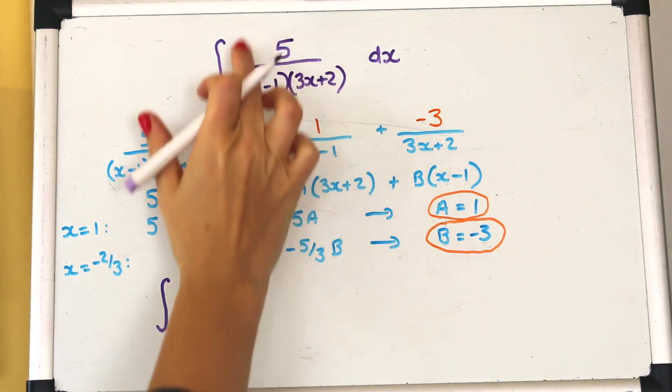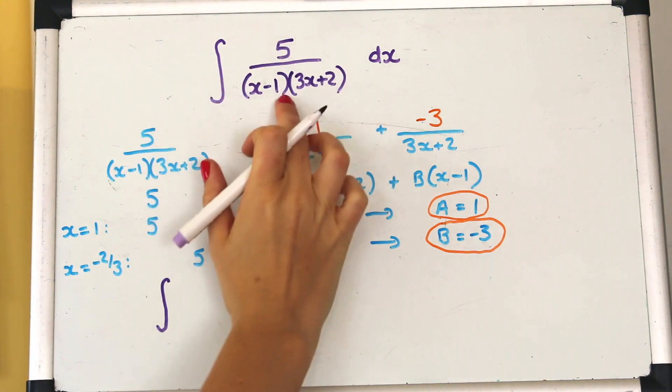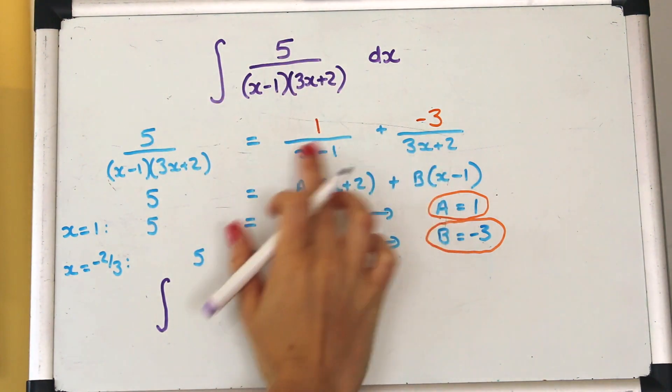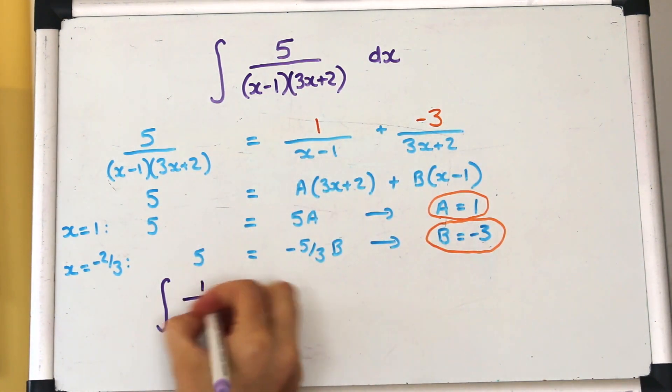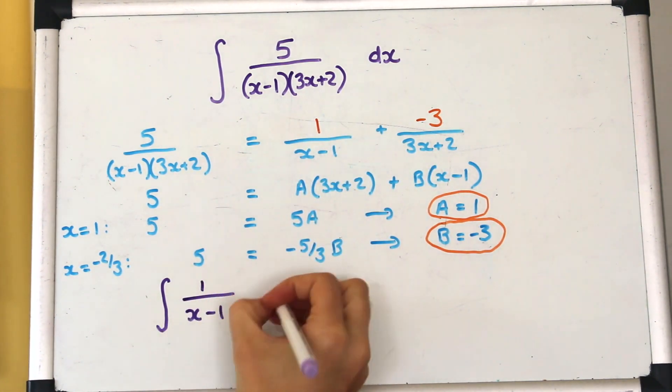So now instead of integrating that function as it stands in purple we can integrate it as the split up partial fractions. So I'm just going to write out the integral with those partial fractions with minus 3 like that.